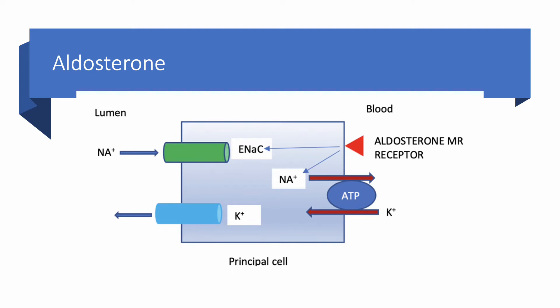Let's review the role of aldosterone. Aldosterone acts on the mineralocorticoid receptor, activating the sodium-potassium ATPase pump so that sodium goes out and potassium goes into the cell. It also affects the ENAC — the epithelial sodium channel — located on the apical membrane of the principal cell in the collecting tubule. With aldosterone, sodium goes in and potassium goes out; this is how potassium is excreted.